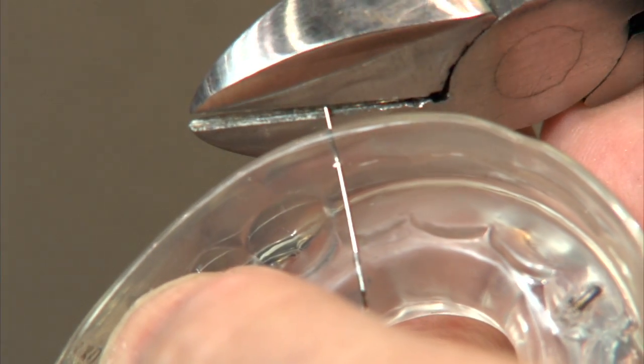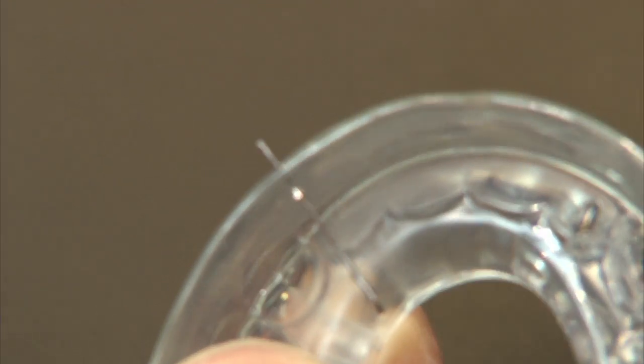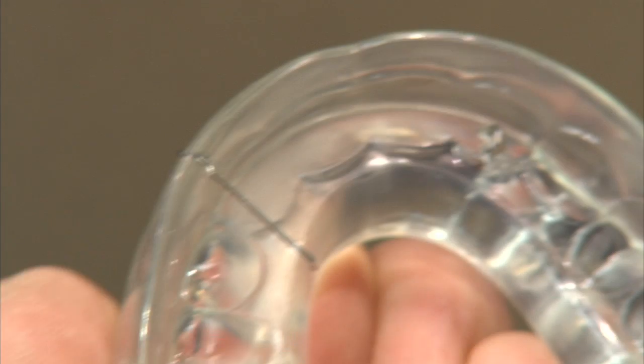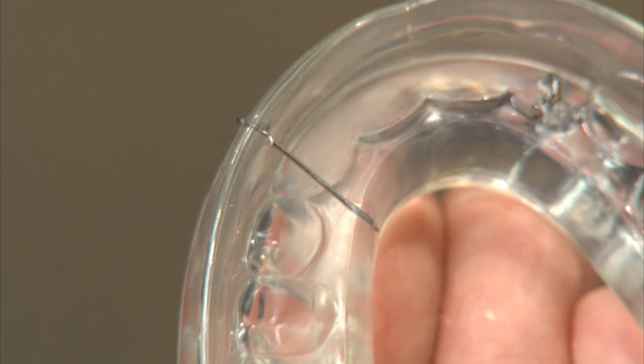We snip the end off, leaving about two or three millimeters, and then we bend this wire again. That serves to move the teeth mesially or distally.